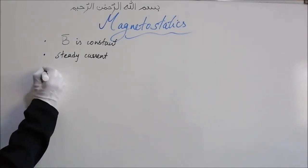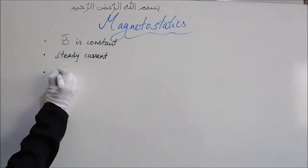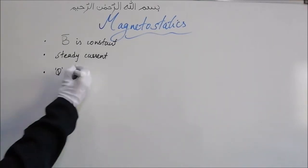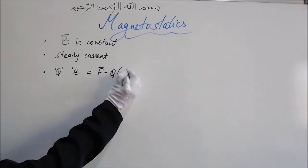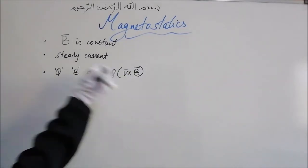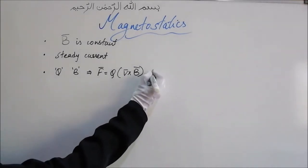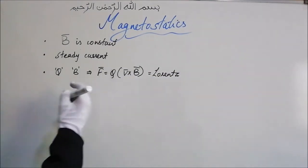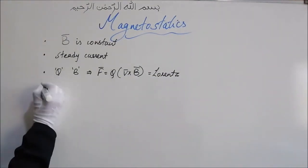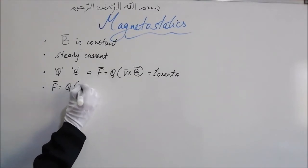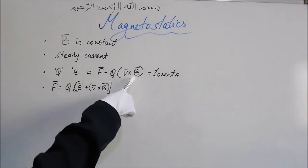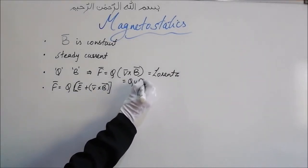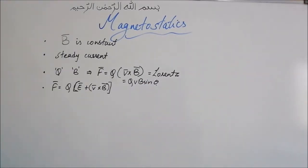The magnetic force on a moving point charge Q in a magnetic field B is given by F = Q(V × B), where V is the velocity of that charge. This force is also called the Lorentz force. In the presence of both electric and magnetic fields, the formula becomes F = Q(E + V × B), which can be written as QVB sin θ, where θ is the angle between V and B.